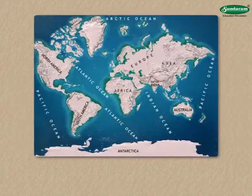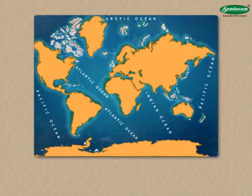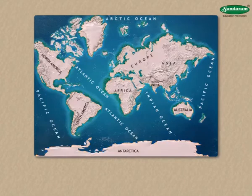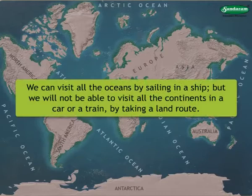Observe the figure. You will see that the portion of land is not continuous. All the land parts are seen to be pieces of various sizes surrounded by oceans. All the oceans are joined to one another naturally. We can visit all the oceans by sailing in a ship, but we will not be able to visit all the continents in a car or a train by taking a land route.